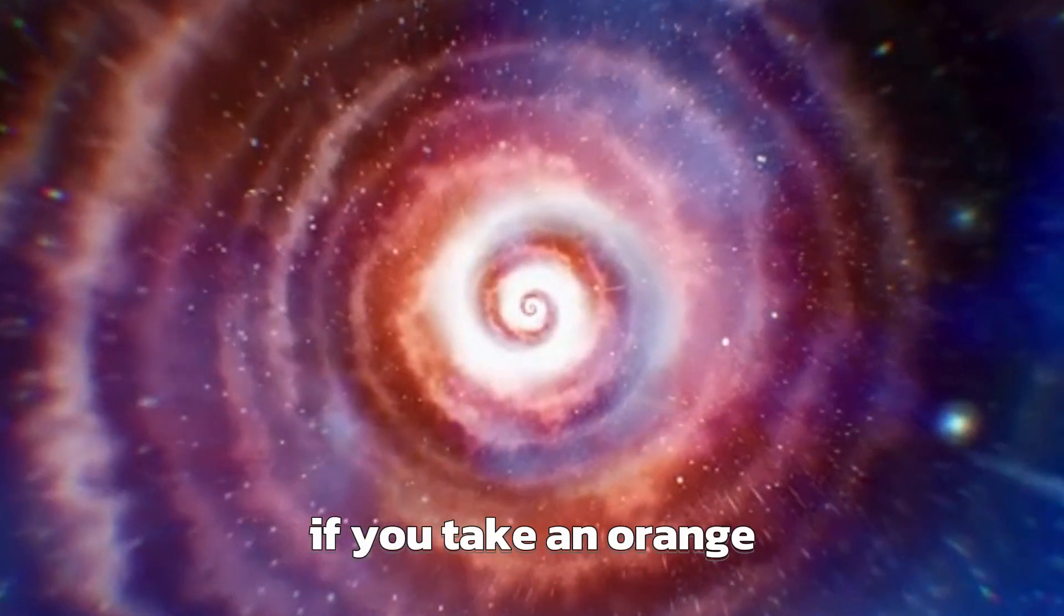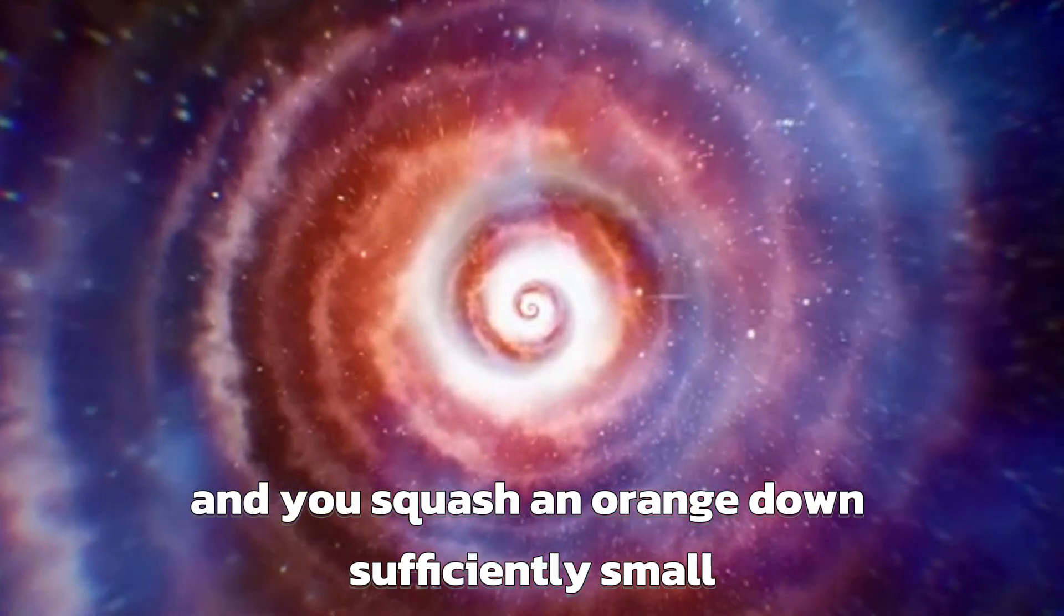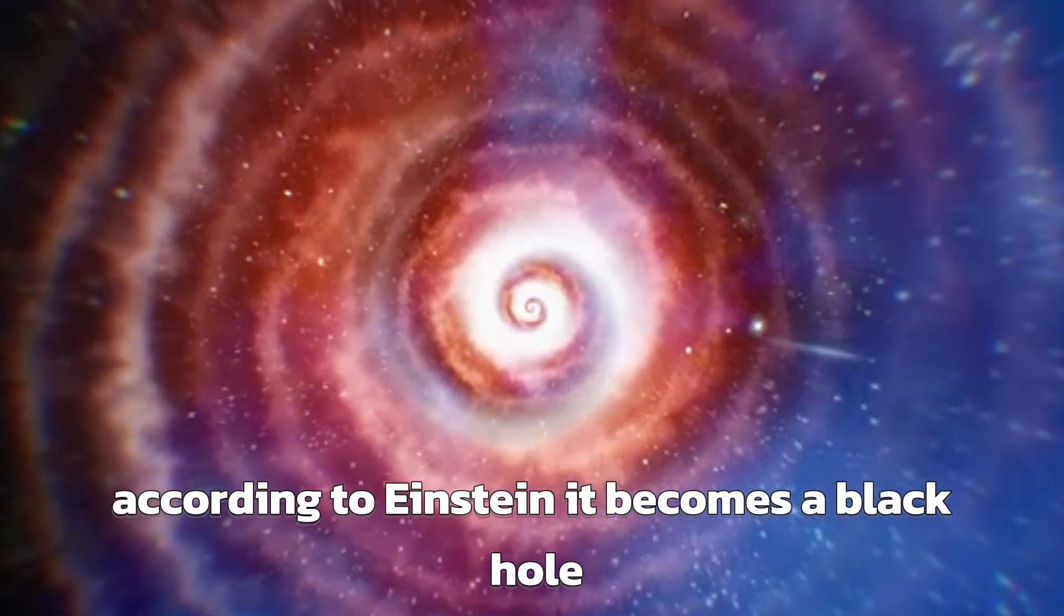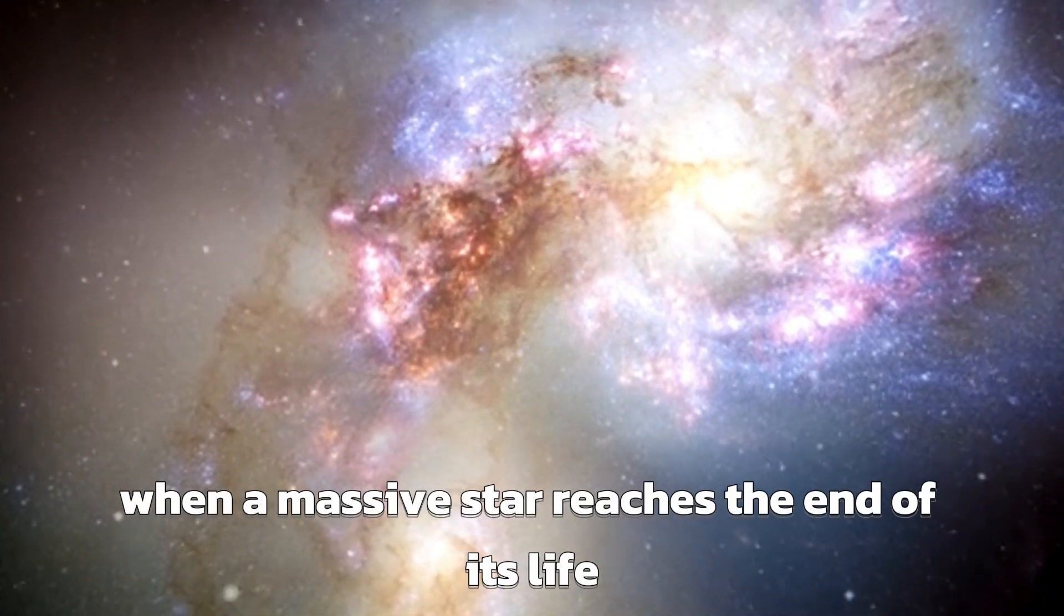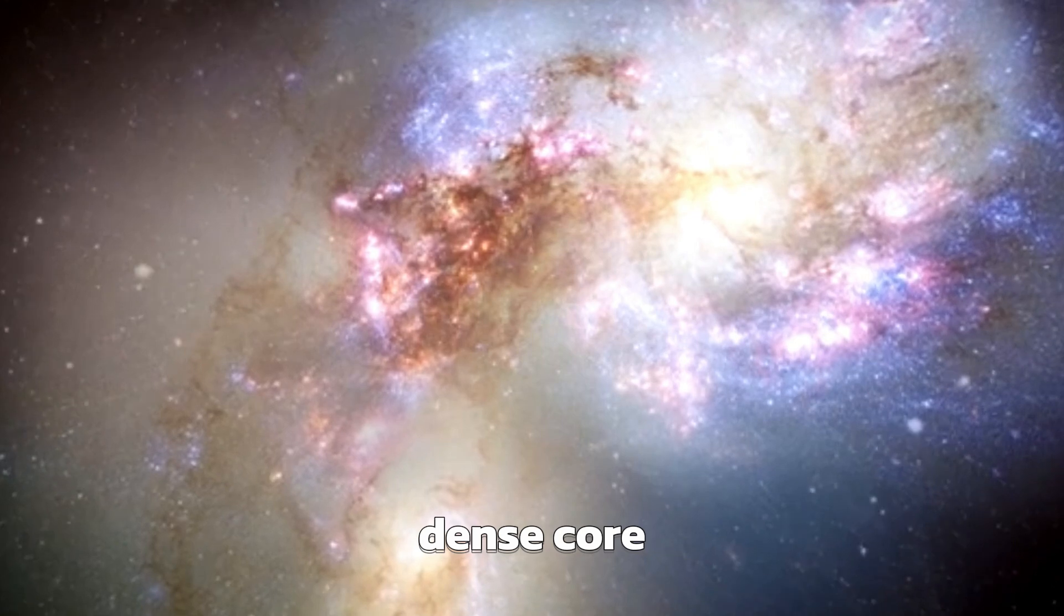If you take an orange and you squash an orange down sufficiently small, according to Einstein, it becomes a black hole. This theory demonstrates that when a massive star reaches the end of its life, it leaves behind a compact dense core.